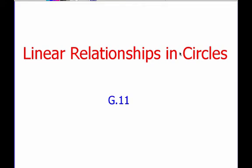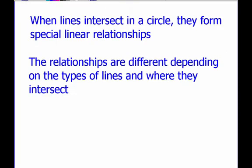For this video, we're going to be discussing linear relationships and circles. Similarly to how in our last video we talked about how lines intersecting in a circle formed angle relationships, we also can find that when lines intersect in a circle, they form special linear relationships. And these relationships are going to be different depending on the types of lines and where they intersect.